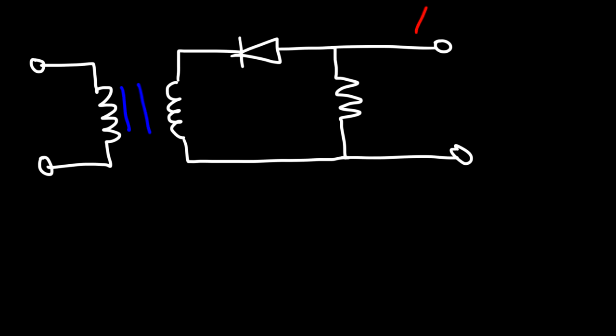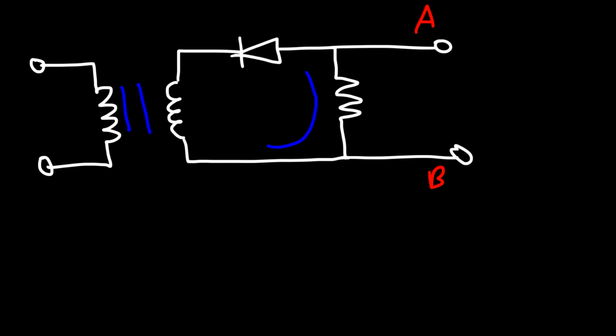Now there's something called the negative half-wave rectifier circuit. In this circuit, the direction of the diode is simply reversed — the diode is now facing the other direction. Everything else is the same. Once again, let's call this A and B. This time, current can't flow in the forward direction. The diode will allow current to flow in the direction of the arrow that's in the diode, so current has to flow in that direction — going this way, so to speak.